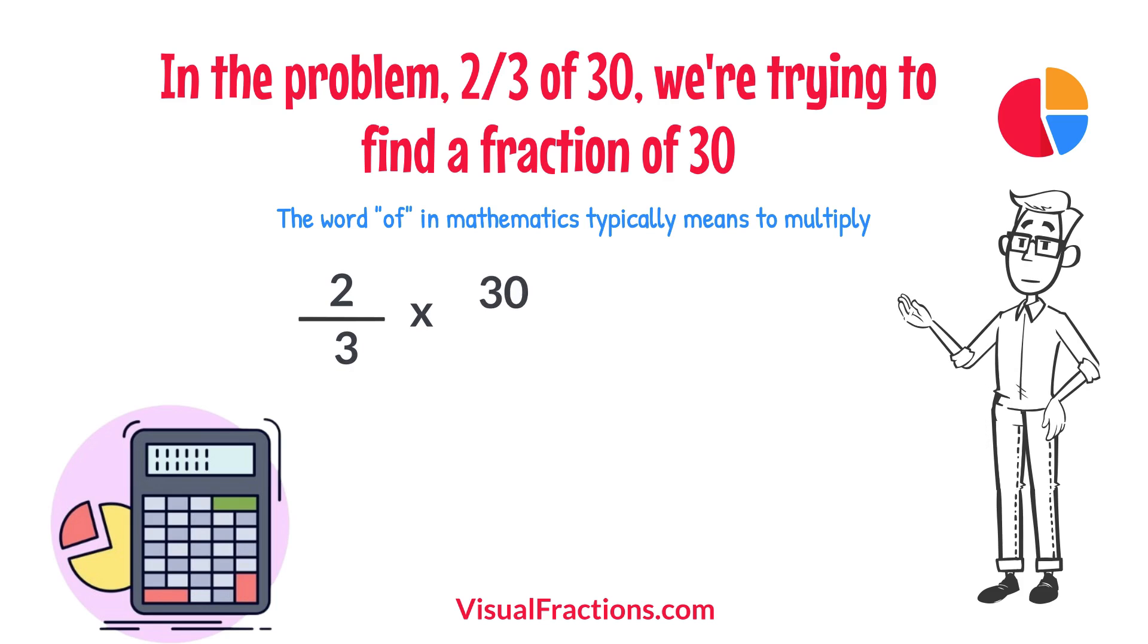To simplify the calculation, we first convert our whole number into fraction form, writing 30 as 30 over 1. This transformation makes it easier to work with our numbers as fractions.